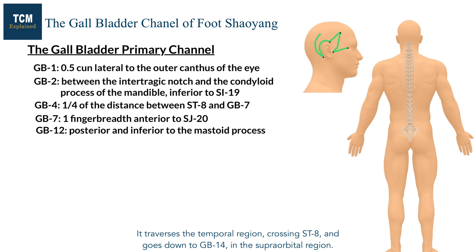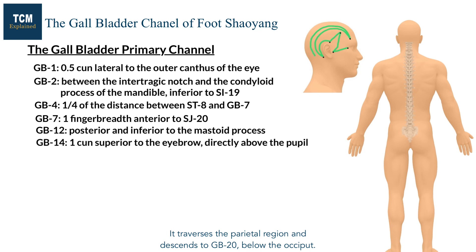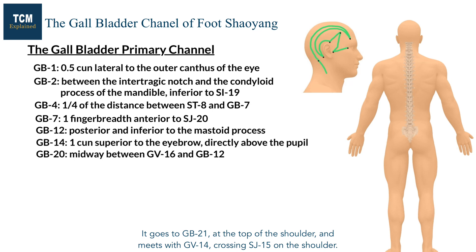It traverses the temporal region, crossing Stomach 8, and goes down to GB14 in the supraorbital region. It traverses the parietal region and descends to GB20 below the occiput. It goes to GB21 at the top of the shoulder and meets with GB14, crossing Sanjiao 15 on the shoulder.